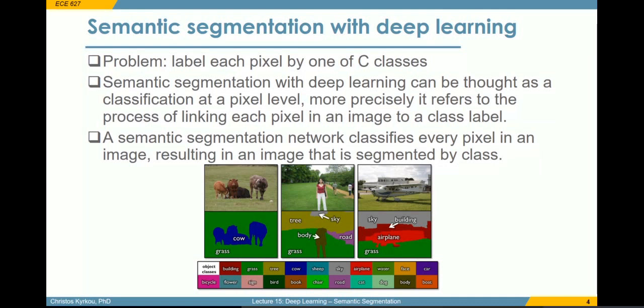This means that when you have pixels of similar color, they may belong to different classes and we can differentiate in this case. In the image shown here, you have a color-coded classification of every pixel. Trees and grass have a different color that corresponds to the class they belong to. This is basically the input-output relationship that a deep neural network will predict.